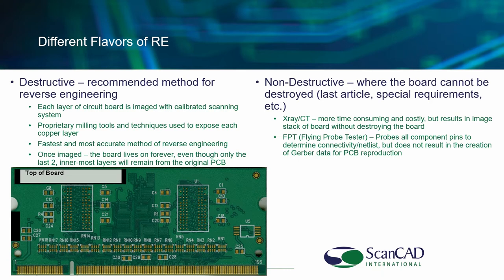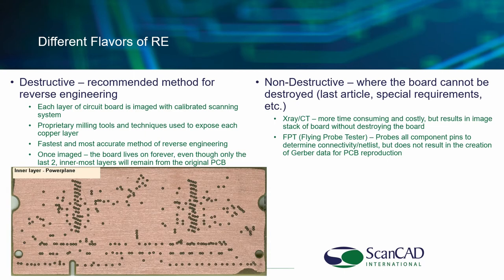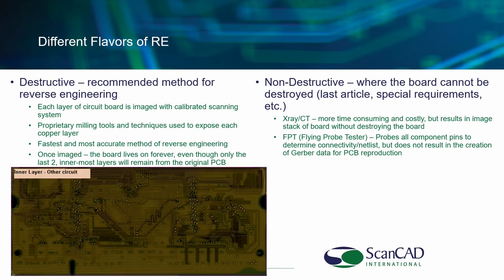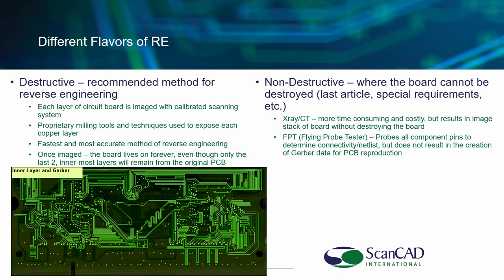If you look down at the bottom of the screen here, you'll actually see some of the layers of a six-layer circuit board that we had processed with this destructive method. We started by capturing a high-resolution image of the outermost circuit layers and then we proceed to mill down and capture images of the subsequent circuit or copper layers. From there, we generate our Gerber or vector data.